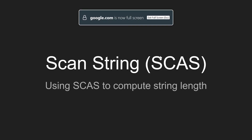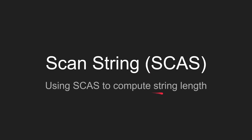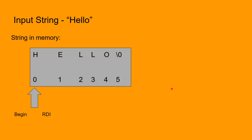In this video we will use the SCAS string instruction to compute the length of a string. Let's say our input string is 'hello'. The layout of the string 'hello' in memory is shown here. We see that the last byte in memory is the null byte, which is also the string terminator byte.